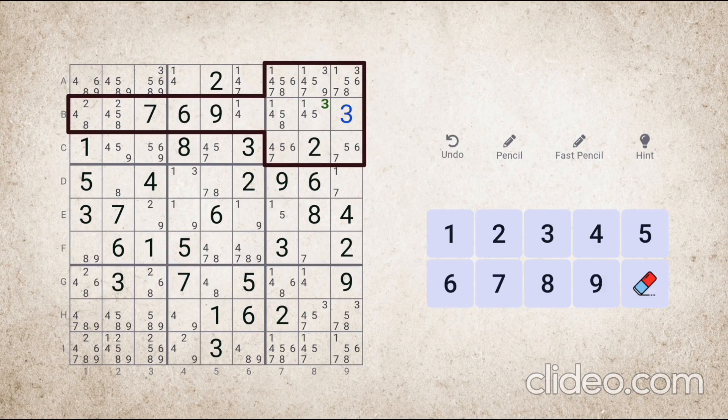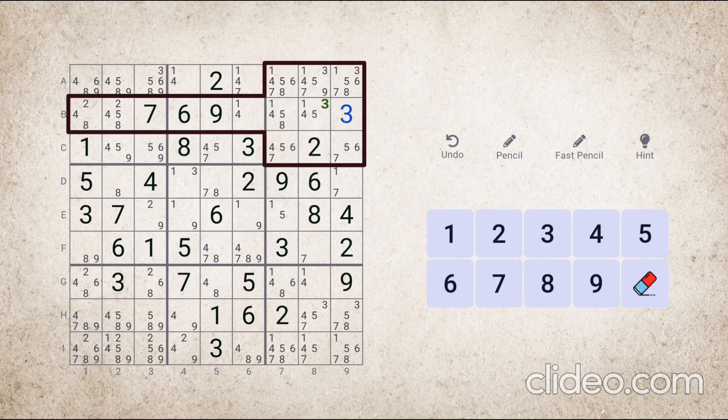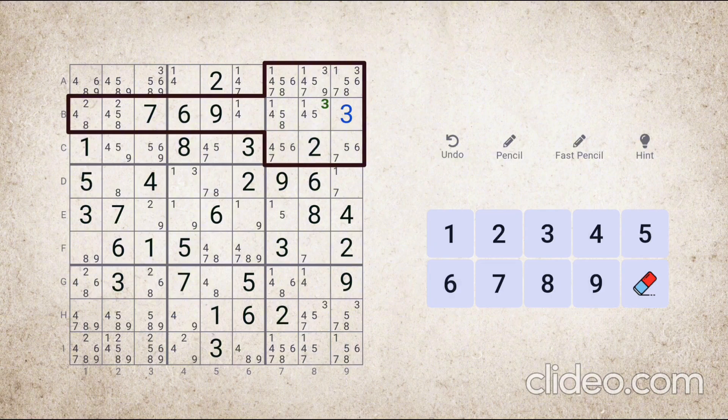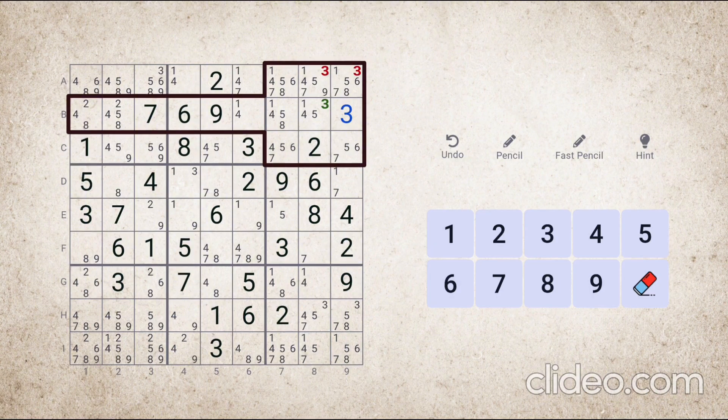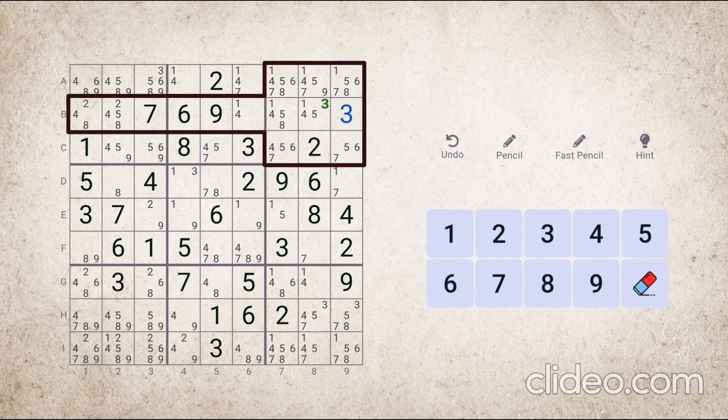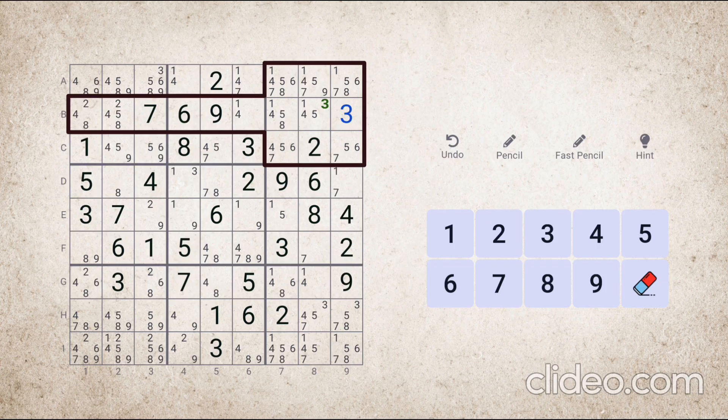And because of this, number three will be removed from all the cells in this block that are not part of this row. So in this example, number three will be removed from these places. This type of formation is also known as claiming technique.